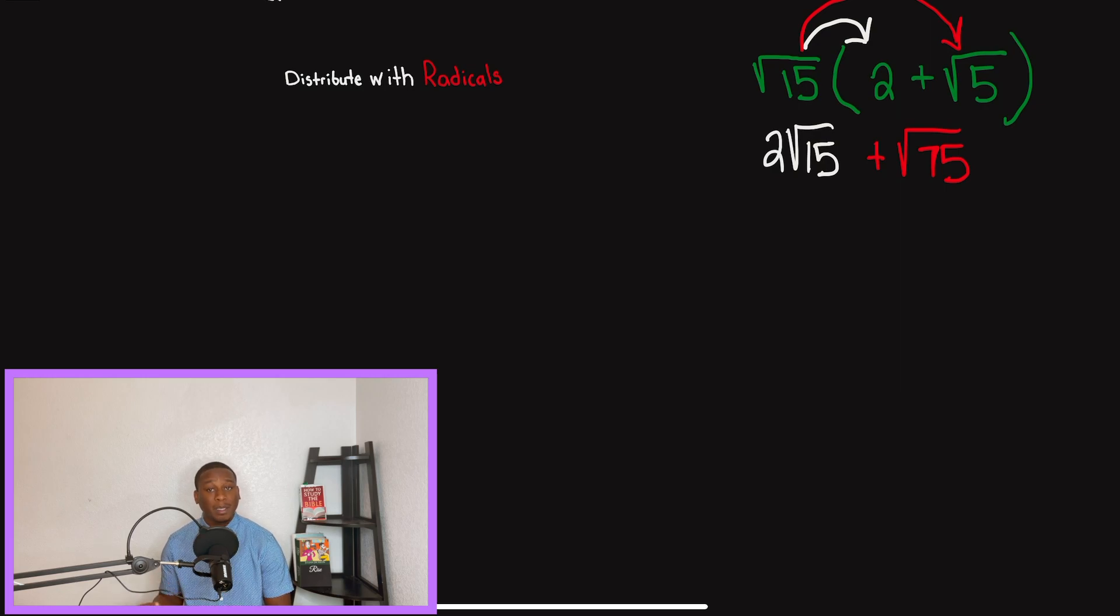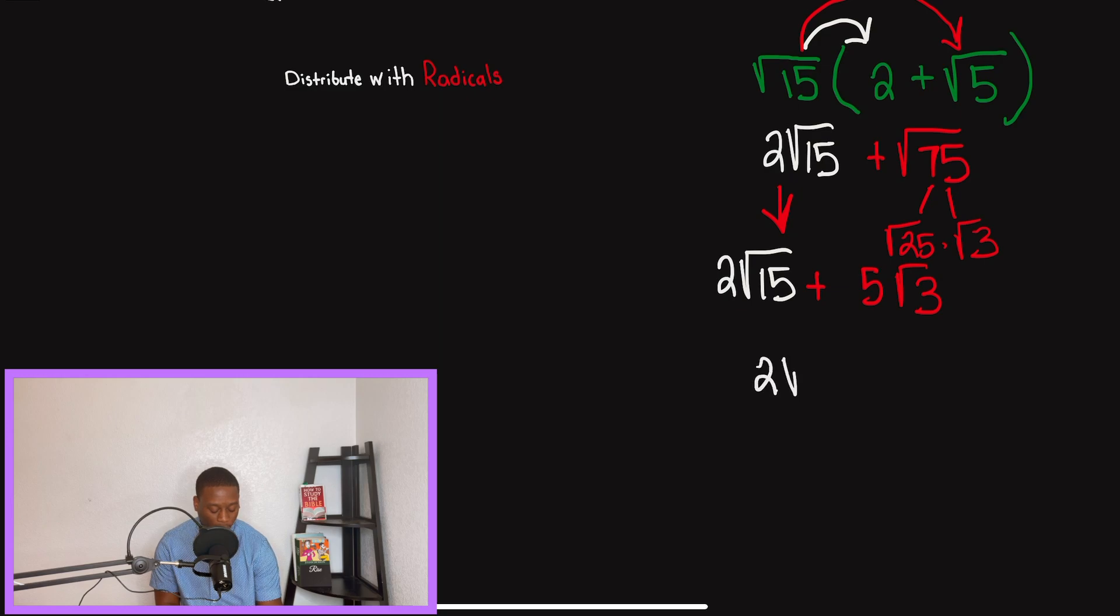Second step is to simplify and add if possible. So 2 radical 15, we cannot simplify that no more because radical 15, there is no perfect square that we could divide 15 by. So it stays the same. However, with 75, we have radical 25 times radical 3, and we know 25 is a perfect square. And once we simplify it, we're going to get 5 radical 3.